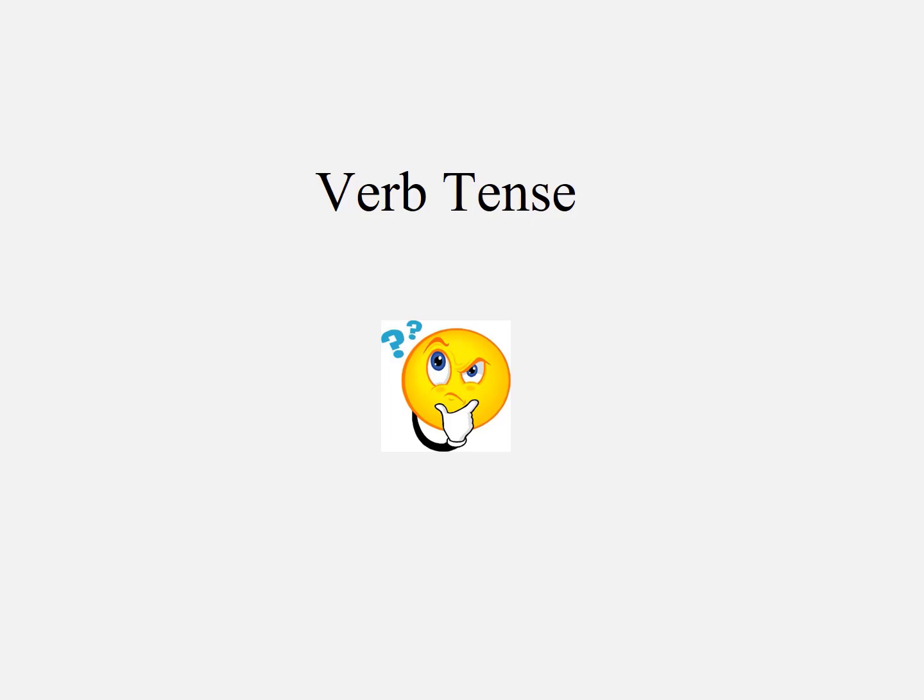Hi everyone. In this short video, I will have a brief introduction about the verb tenses used in scientific paper writing. A scientific paper consists of the introduction, method, results, and discussion, and at the very end you will have a summary. This is the basic structure of a scientific paper.